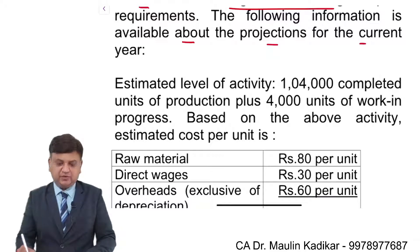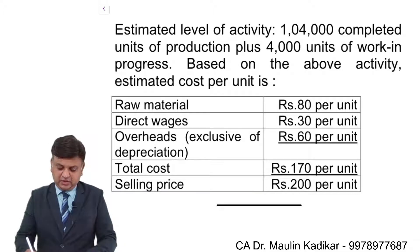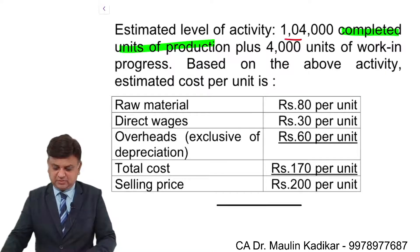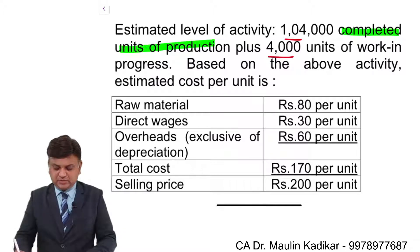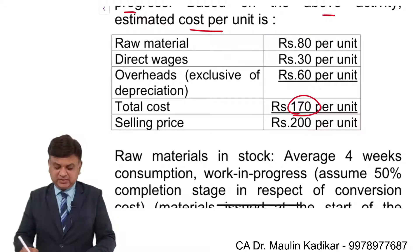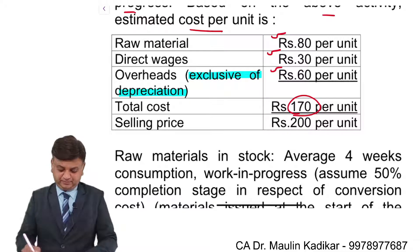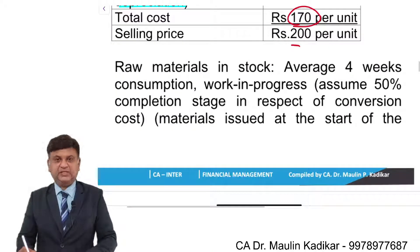Estimated level of activity: one lakh four thousand completed units of production — that is output — plus four thousand number of units as WIP. Based on the above activity, the estimated cost per unit is ₹170, consisting of material, labor, and overhead, excluding depreciation. The selling price is ₹200.